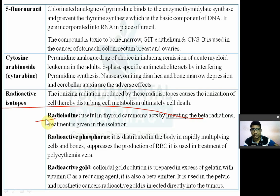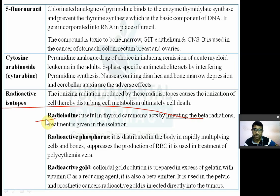Radio iodine is used in thyroid carcinoma. It acts by emitting beta radiation and is useful in the treatment of thyroid carcinoma. Treatment should be given in isolation to prevent radiation exposure to others.